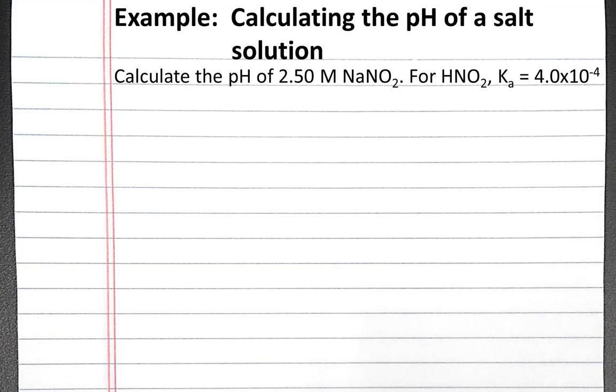In this video, we'll calculate the pH of a salt solution. We're given a solution of 2.5 molar sodium nitrite. We're also given the Ka value for nitrous acid.